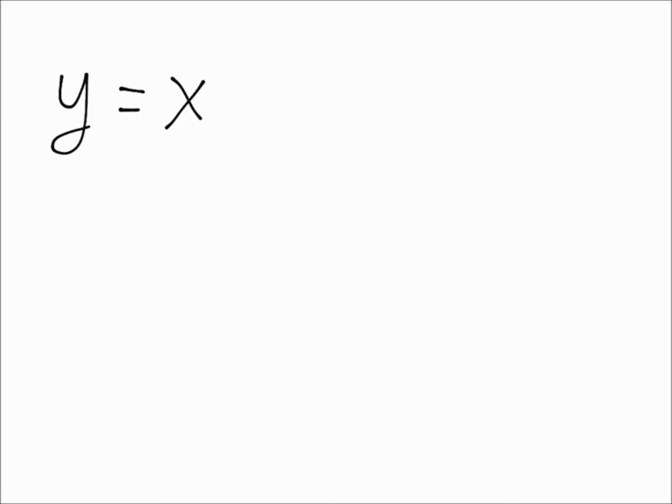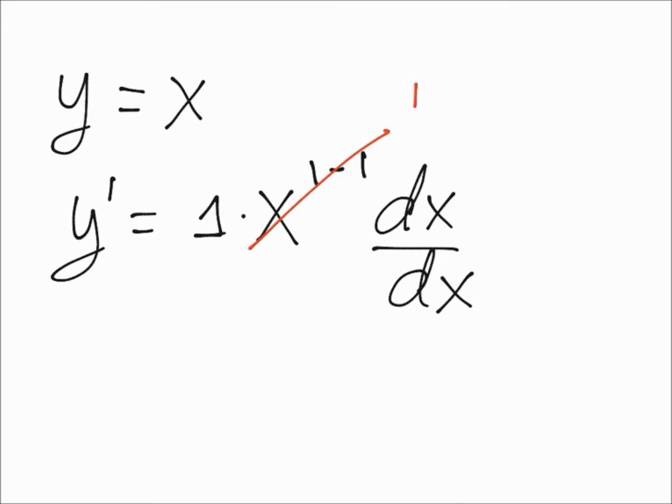Now the power of this x is one so the first thing you'll do is write that one as a coefficient but you don't really have to write it because it's just one. Then you're going to subtract the power so one minus one that's going to give us zero so it will make all of this one. This is going to be one, we have one here and this is one as well so our result is one and that's how you obtain it using the power function.